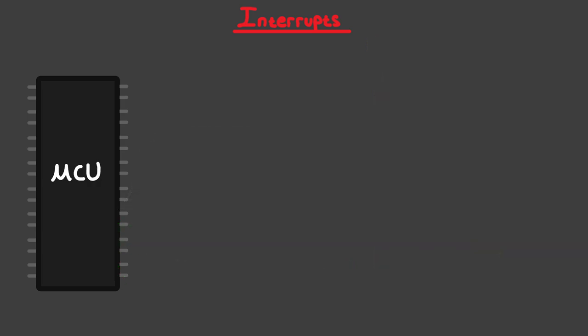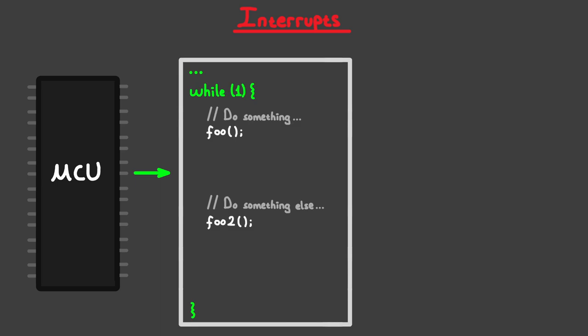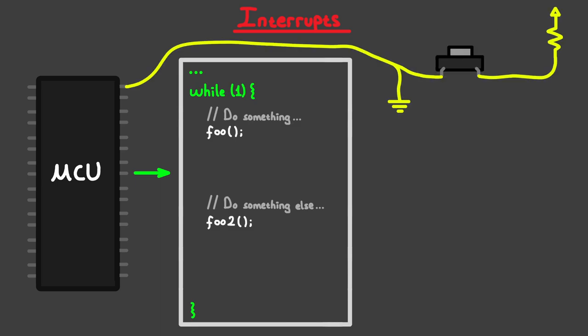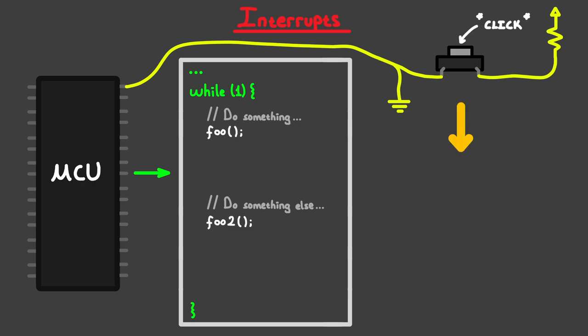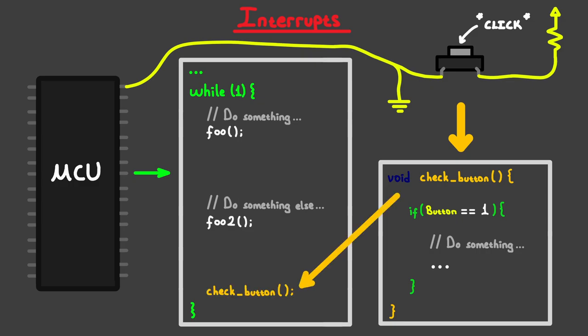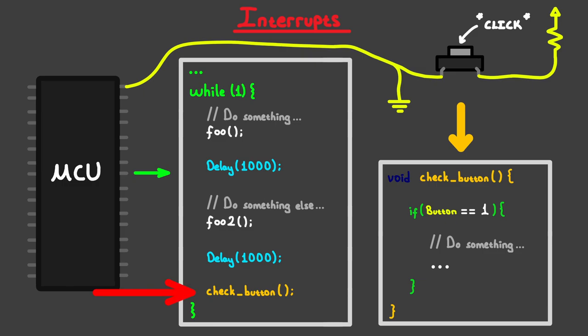Let's transfer that keyboard example onto our microcontroller. Say the microcontroller is constantly executing a program on loop, and we want it to react to a button press on one of its pins and execute a function. How can we make this happen? You could put code to check the state of the pin to detect the button press inside the loop. But if the code has a lot of delays, you'd skip most of your button presses unless you press it right when the microcontroller is executing the pin check.